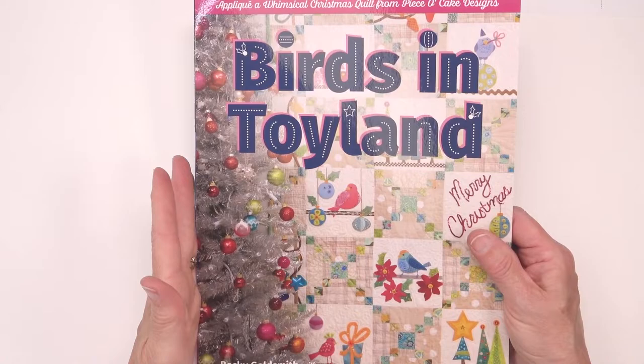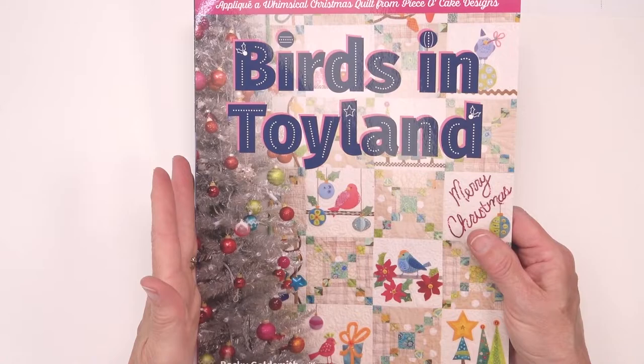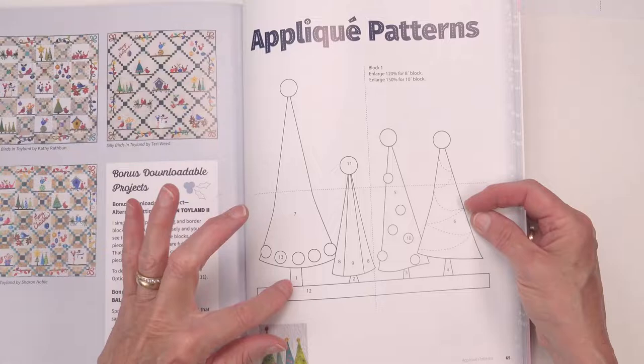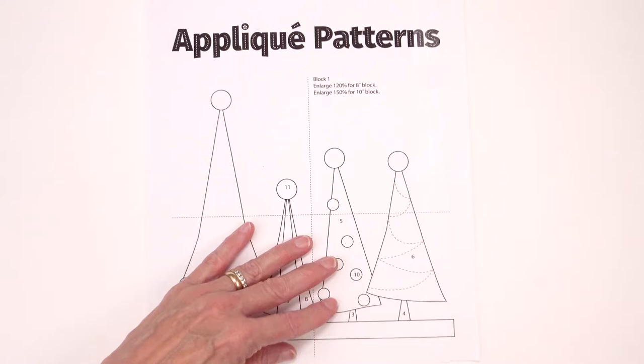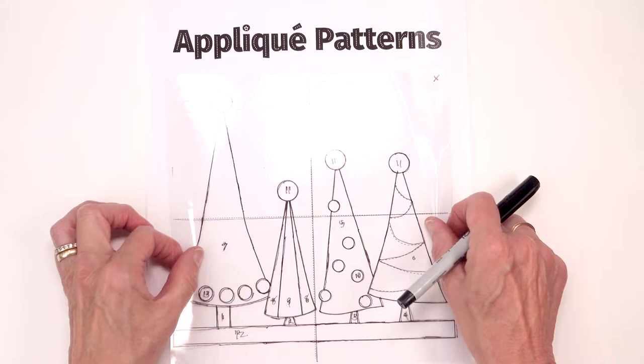You can do your demonstration on any block in the book. I have chosen to begin with block number one. I'm going to focus on shapes one and seven. Once you have the pattern printed to the size you want, you will need to have a placement overlay drawn and ready to go.